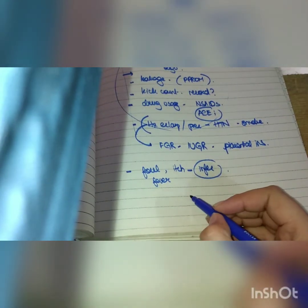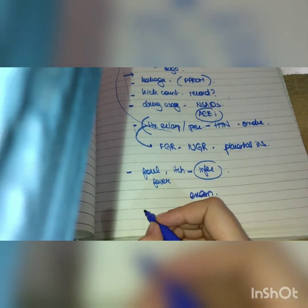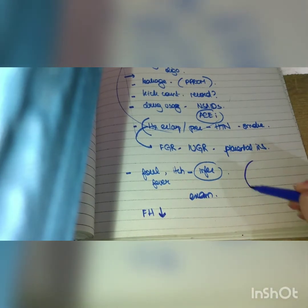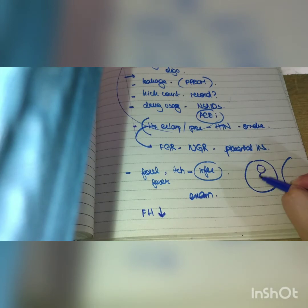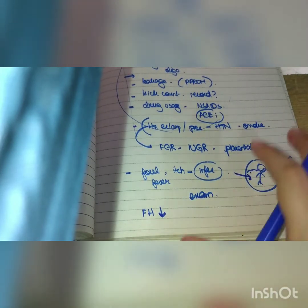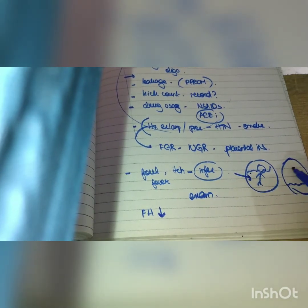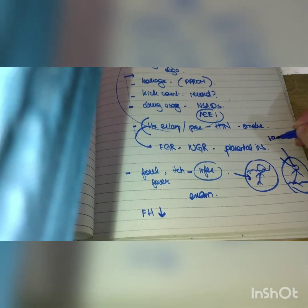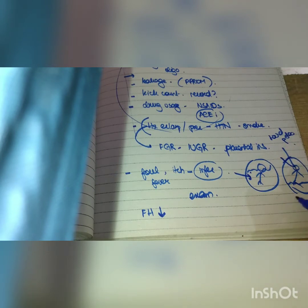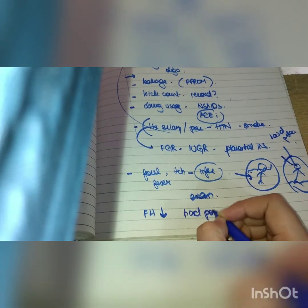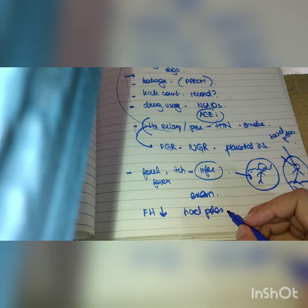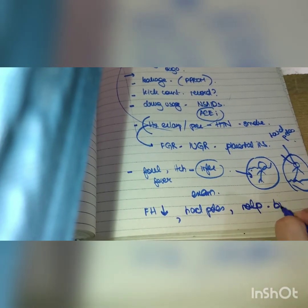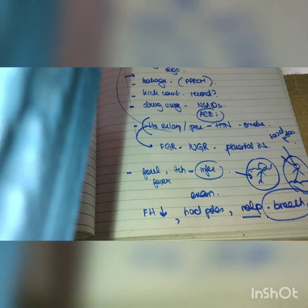On examination, the fundal height will be smaller than dates, as in our scenario. Normally the baby floats in fluid giving a distended abdomen, but if fluid is decreased you feel hard fetal poles — the baby is easily palpable. The abdomen appears small. Additionally, malpresentation is common: the baby may be in breech presentation. The commonest malpresentation associated with oligohydramnios is breech presentation.